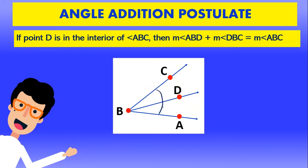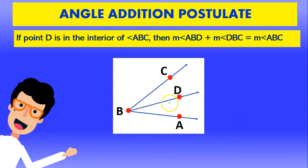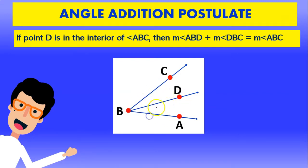So angle CBD plus angle DBA is going to give us the whole angle CBA — CBA is the whole thing. So when we add the two smaller angles, it gives us the whole angle. It's very similar to the segment addition postulate.